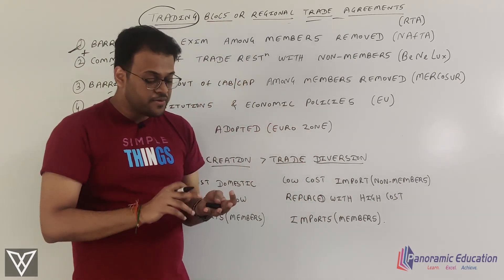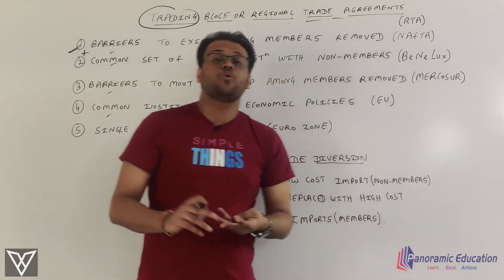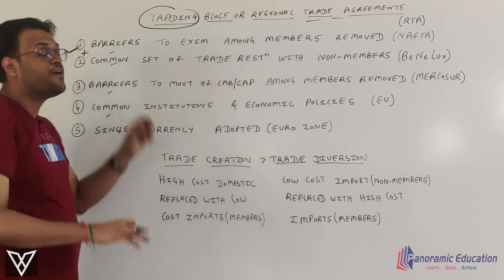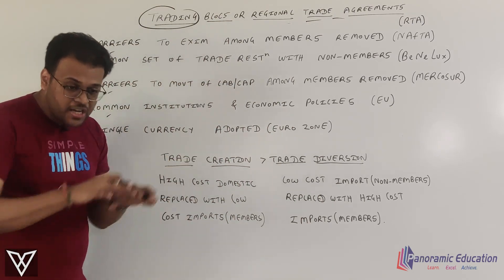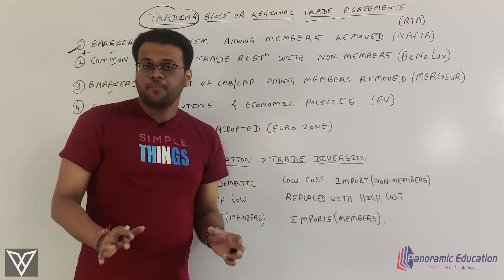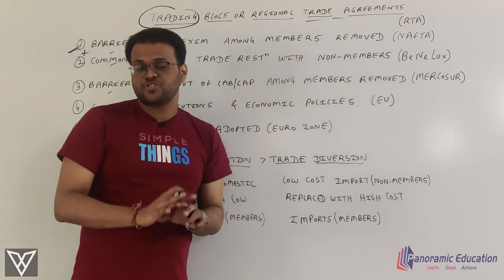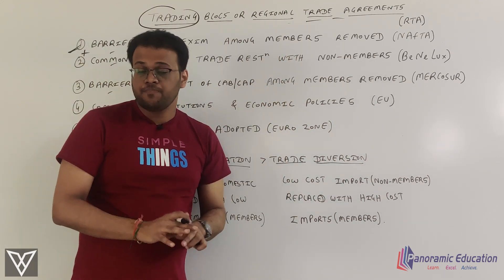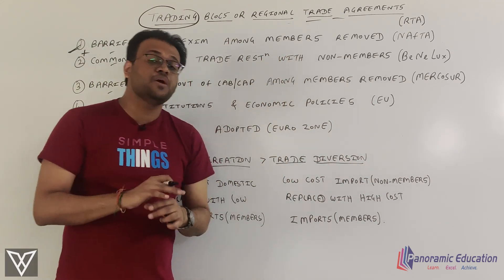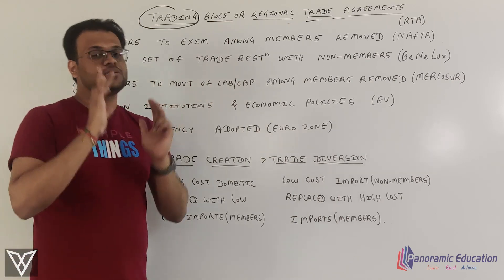In the case of Mercosur — covering Brazil, Argentina, Paraguay, and Uruguay — the four countries agreed to free trade among themselves, applied similar restrictions to other countries, and made the movement of labor and capital easier among the four members.